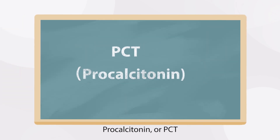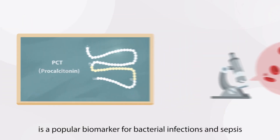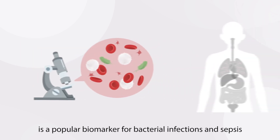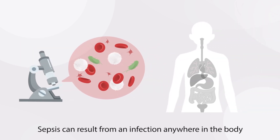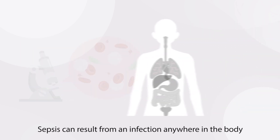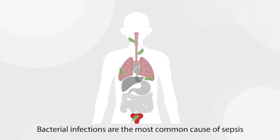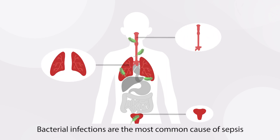Procalcitonin, or PCT, is a popular biomarker for bacterial infections and sepsis. Sepsis can result from an infection anywhere in the body, such as the lung, respiratory tract, and urinary tract. Bacterial infections are the most common cause of sepsis.